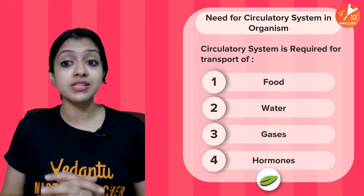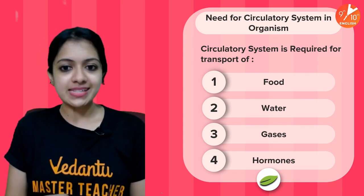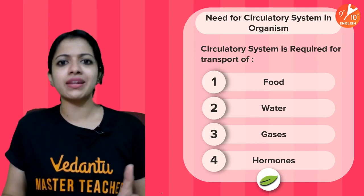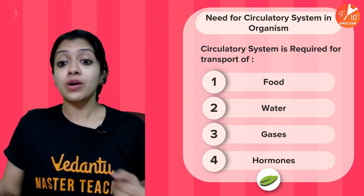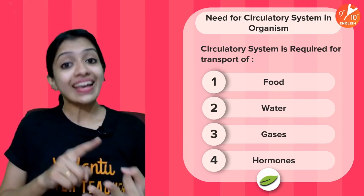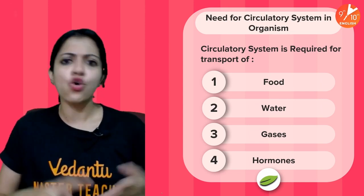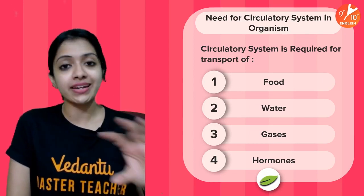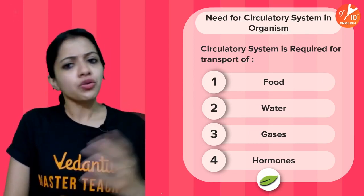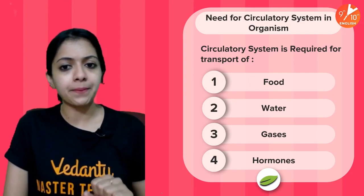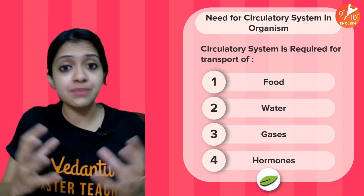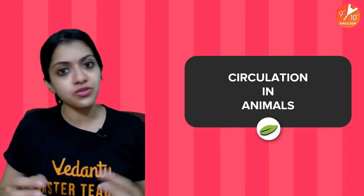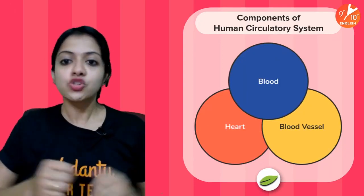Let us start with talking about the need for a circulatory system in an organism. A circulatory system is required for the transport of various substances in the body — be it a plant or an animal — including transport of nutrients, food, water, gases, and hormones. When we say gases, it's mainly oxygen and carbon dioxide, especially the respiratory gases. Regardless of which organism we are talking about, a well-developed transport system is very important.